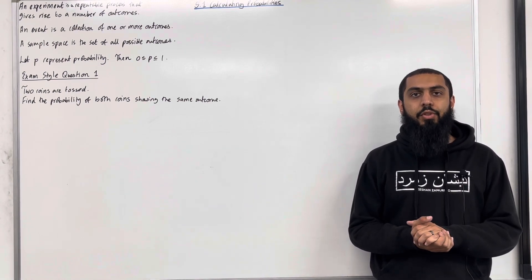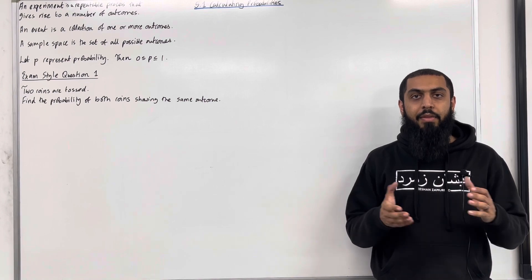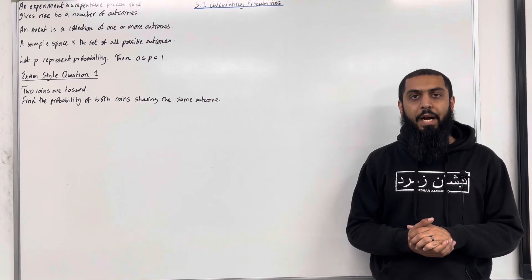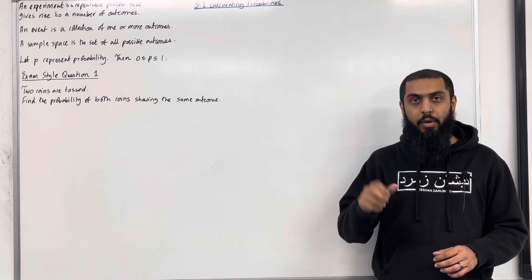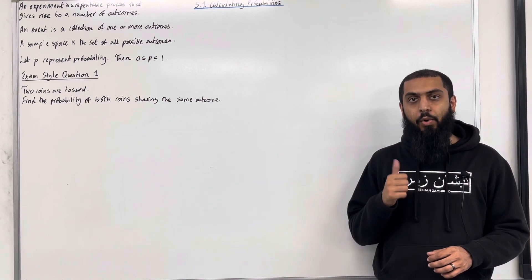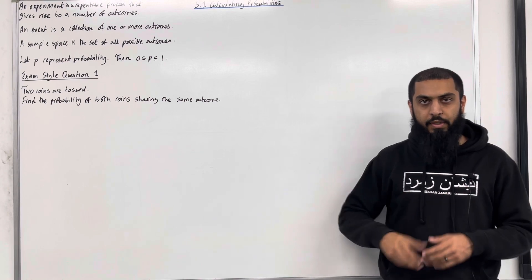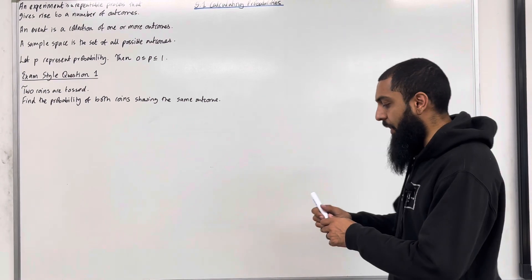Let's have a look at the solution to exam style question 1. The very first step is to draw a sample space diagram. This diagram includes all the possible outcomes of this experiment. If I toss a coin, there are two possible outcomes, head or tail. The diagram that I'm going to draw is for tossing two coins. Here is the sample space diagram.